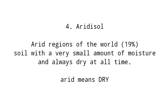Number four soil order is tinatawag nating aridisol. Arid regions of the world is composed of 19% — soil with a very small amount of moisture and always dry at all times. From the word arid which means dry. Take note na din guys na pag sinabi natin aridisol soil order, not necessarily na desert soil ito — iba yung desert soil.